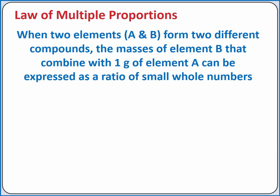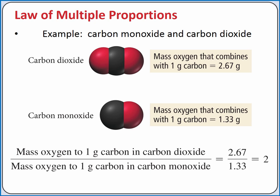Our third law applies to samples of two different compounds made up of the same elements. According to the law of multiple proportions, when two elements, let's say A and B, form two different compounds, the masses of element B that combine with 1 gram of element A can be expressed as a ratio of small whole numbers.